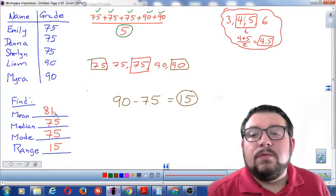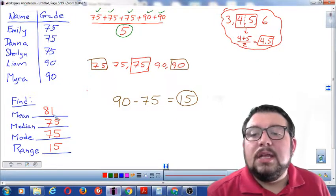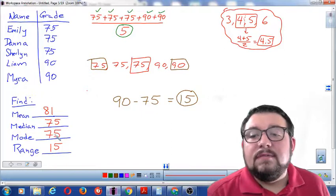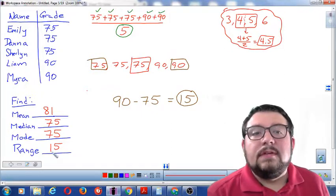And those are the four central tendency numbers. For this data set, the mean is 81, the median is 75, the mode is 75, and the range is 15.